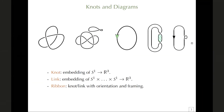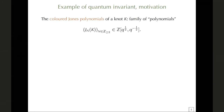The framing is given by an integer representing the number of times you twist, so these are refinements of the theory. Sometimes you want a topological invariant of knots, sometimes you want it to take into account orientation and framing. We mostly look at oriented knots with framing today.